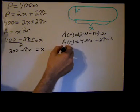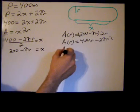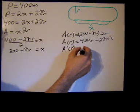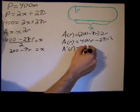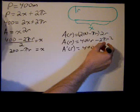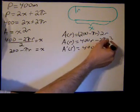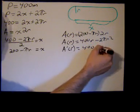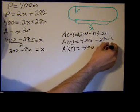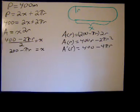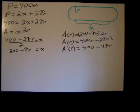Now it's time to go ahead and take the derivative with respect to r. So we get A prime of r equals the derivative of 400r is 400. The derivative of negative 2 pi r squared, bring the exponent of r down, multiply it by the 2, you get negative 4 pi r.